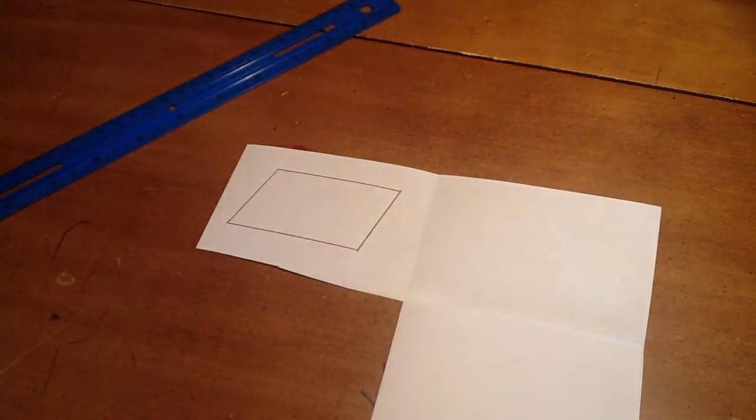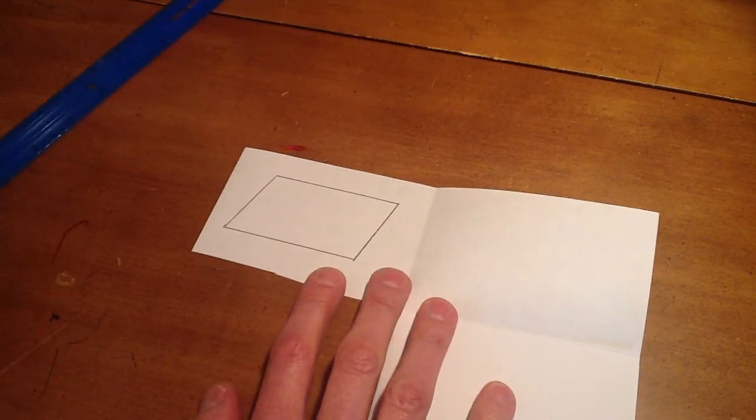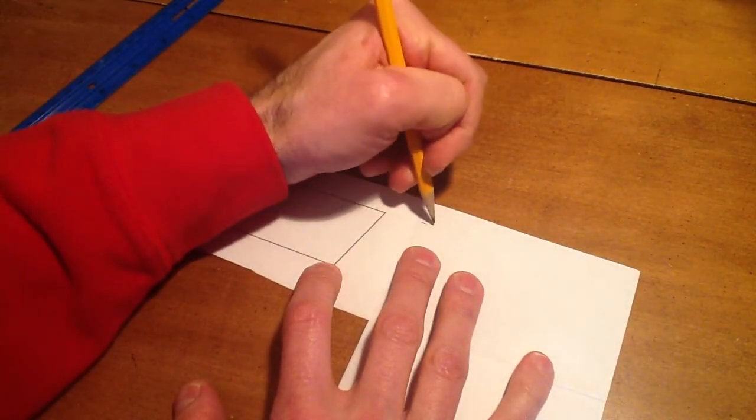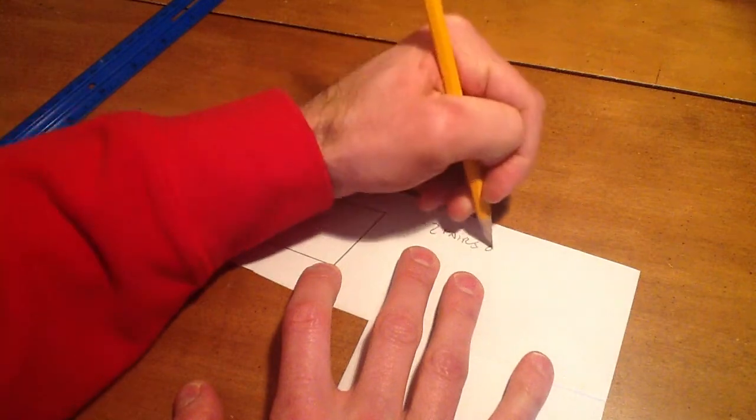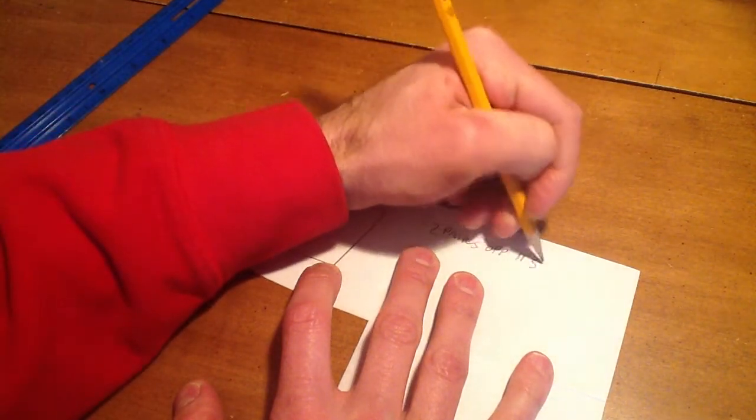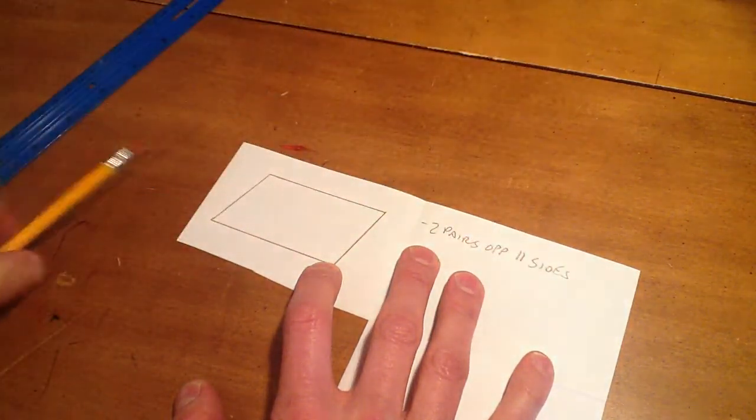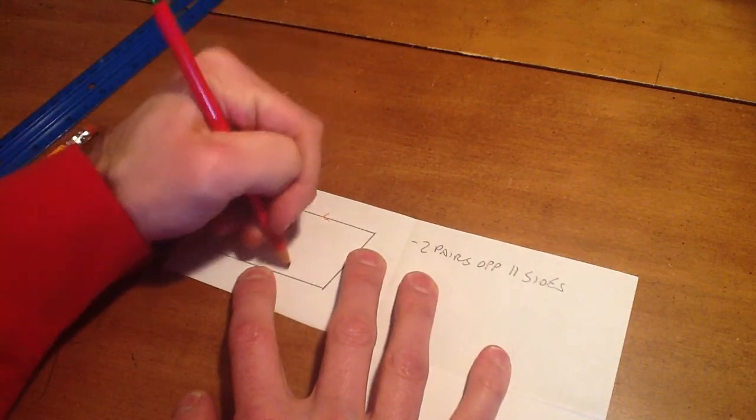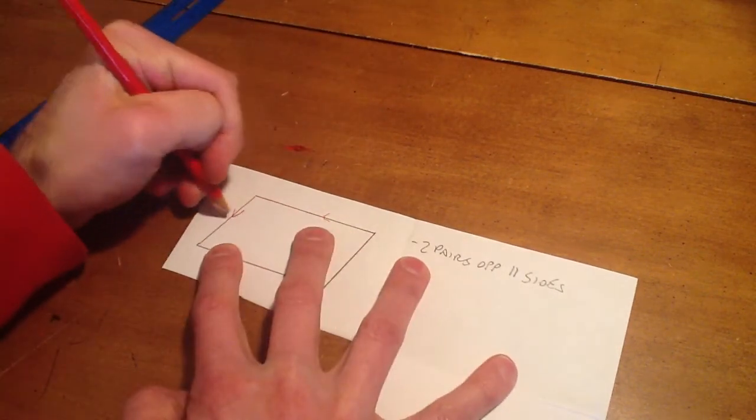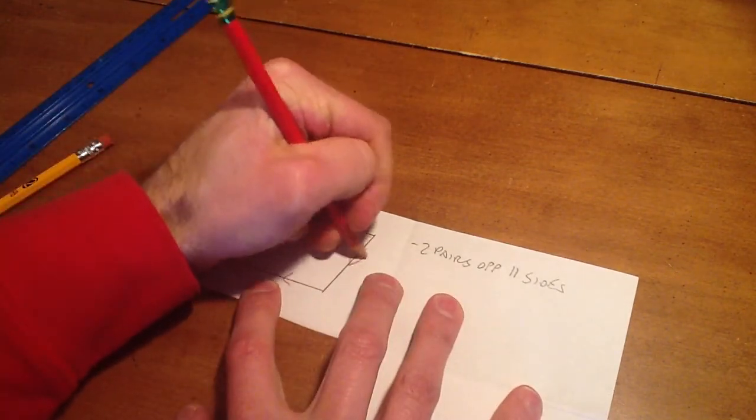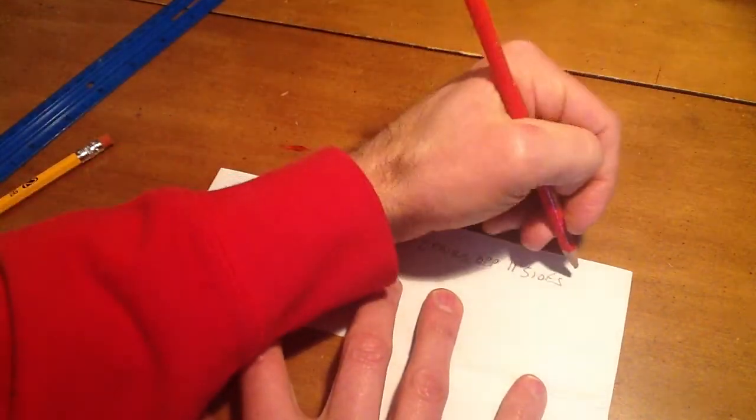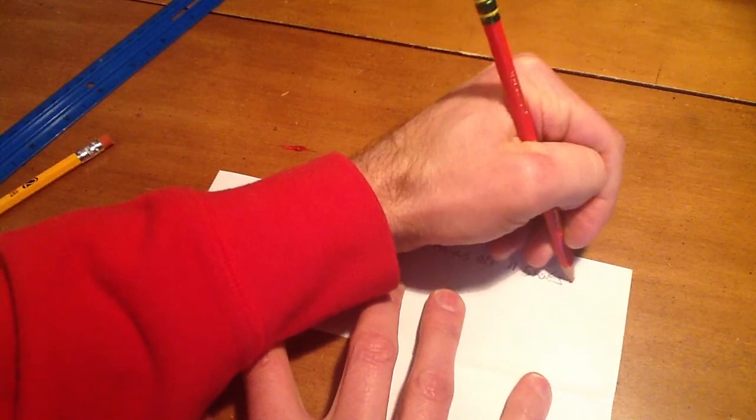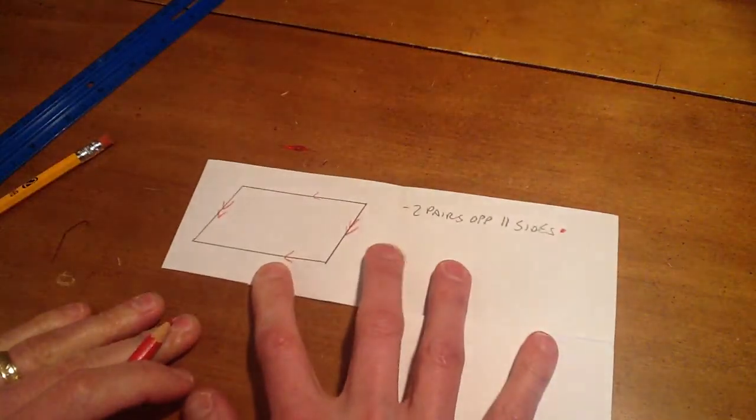Parallelogram's got a lot of great properties. The first one is the one that defines it. It's got two pairs of opposite parallel sides. So what we want to do is take a colored pencil, mark it in the shape, top parallel to the bottom, left parallel to the right, and then next to our property, we're just going to make a little color code here.